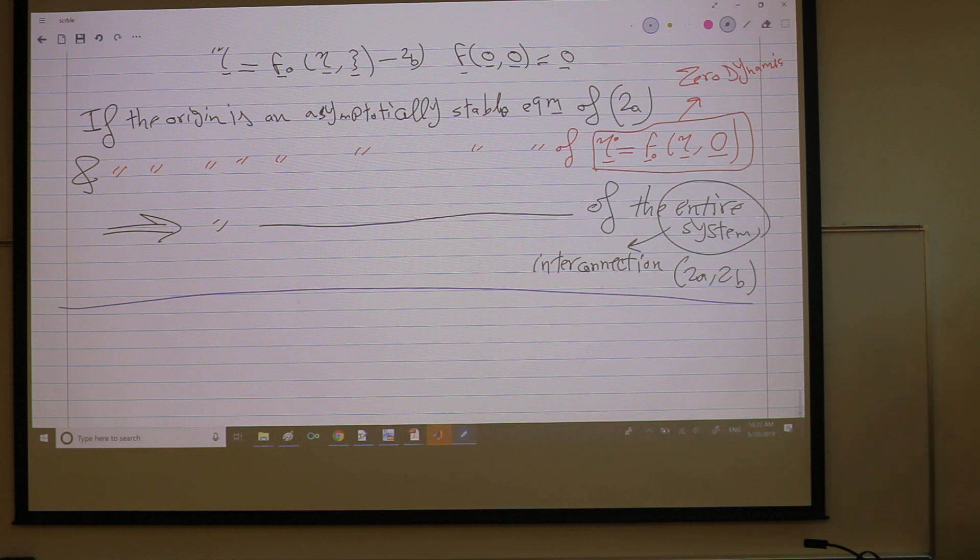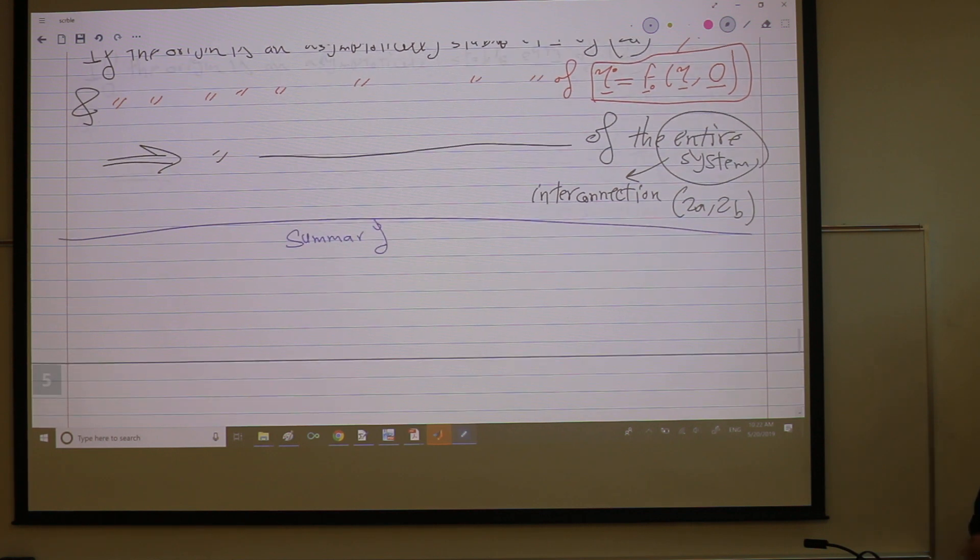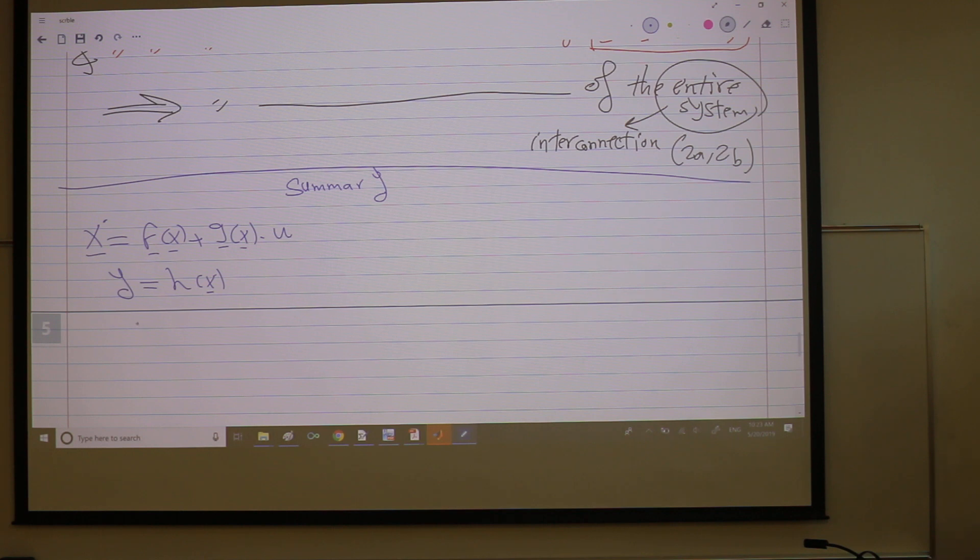So let's have a summary here. So we have x dot is f of x plus g of x times u. Now we have an output function, I have to specify an output function and you need to tell me that it has a relative degree, otherwise we don't control anything. So the relative degree is r. And like I said, we're looking for a transformation z equals c of x and feedback alpha plus beta v.